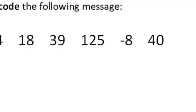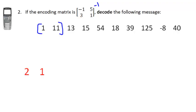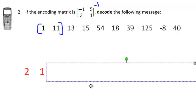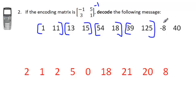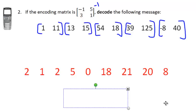There are our first decoded numbers: 2 and 1. Pause the video and do the rest yourself, remembering to use the inverse each time. Take 13 and 15, multiply by the inverse; then 54 and 18, multiply by the inverse, and so forth. Sometimes you'll have a 0 at the end if there wasn't an even number of characters. Going through the alphabet — 2 is B, 1 is A, then E — the message was 'Babe Ruth.'